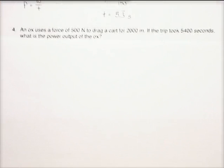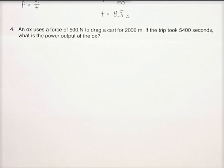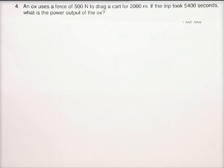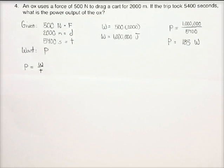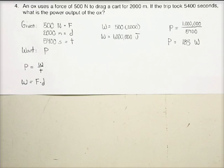All right. Now let's make this as bad as it can possibly get. An ox uses a force of 500 newtons to drag a cart for 2,000 meters. If the trip took 5,400 seconds, what is the power output of the ox? That is, we're looking to find the power of the ox. So in order to do this, we've got quite a few things to look at. So first you write down your givens, just as we've done before.